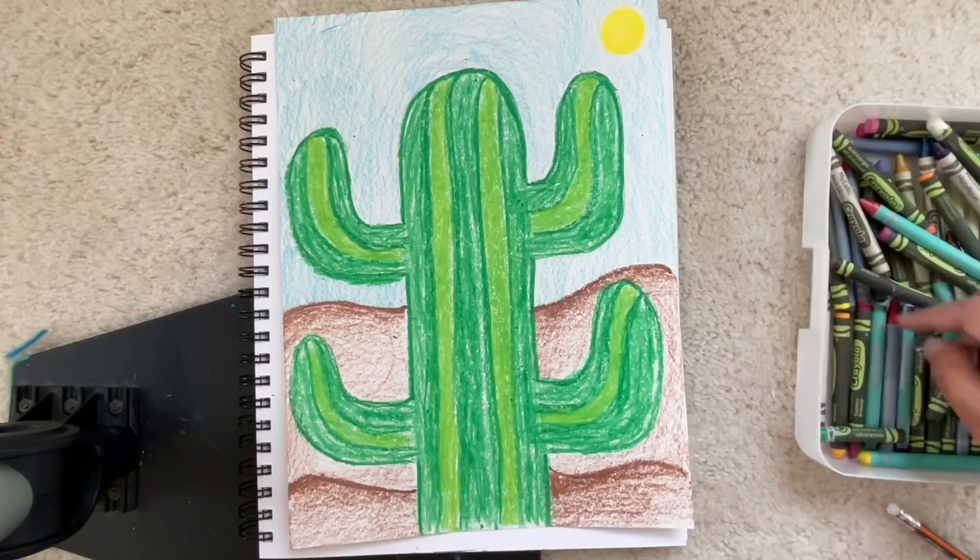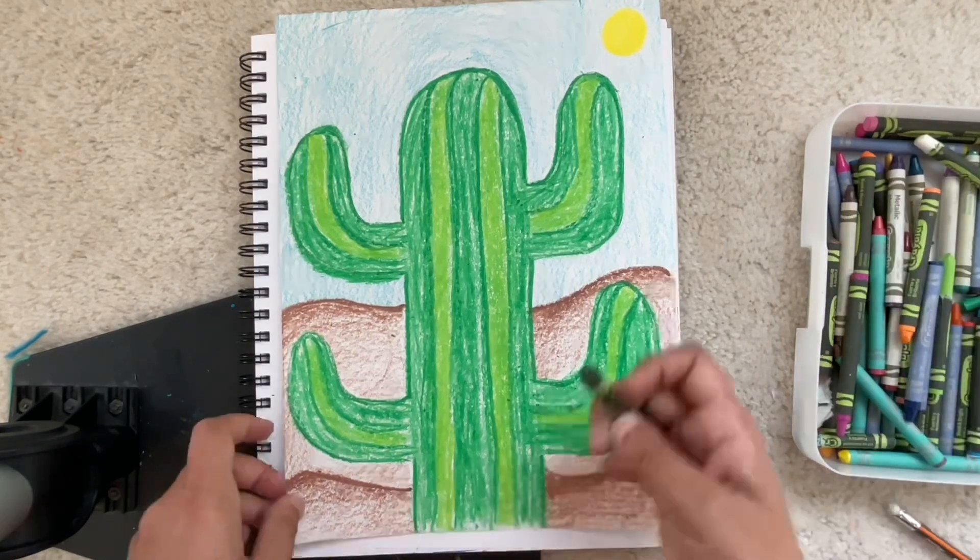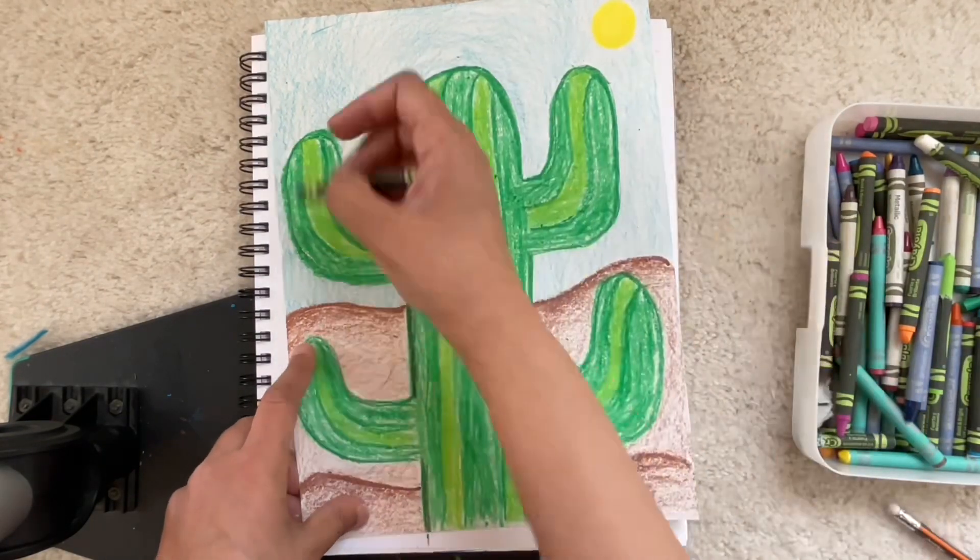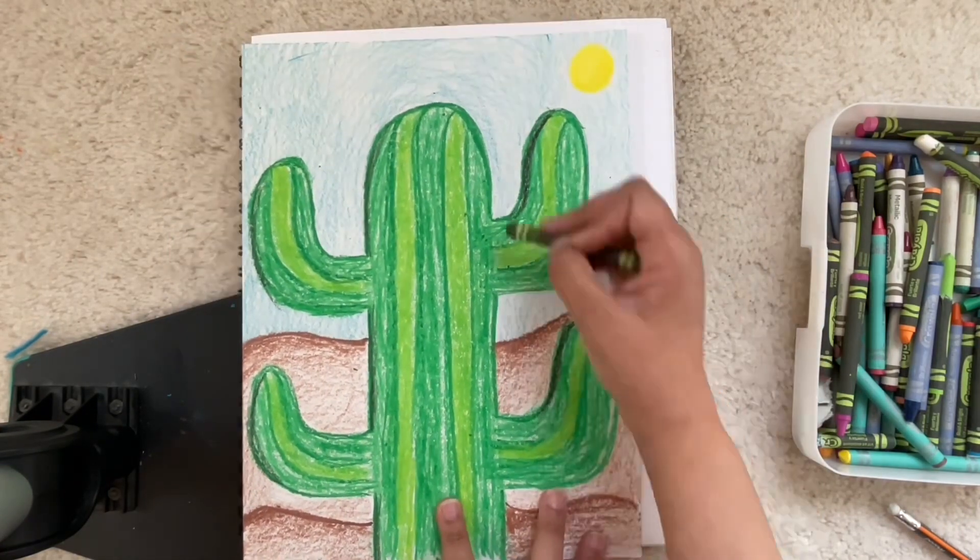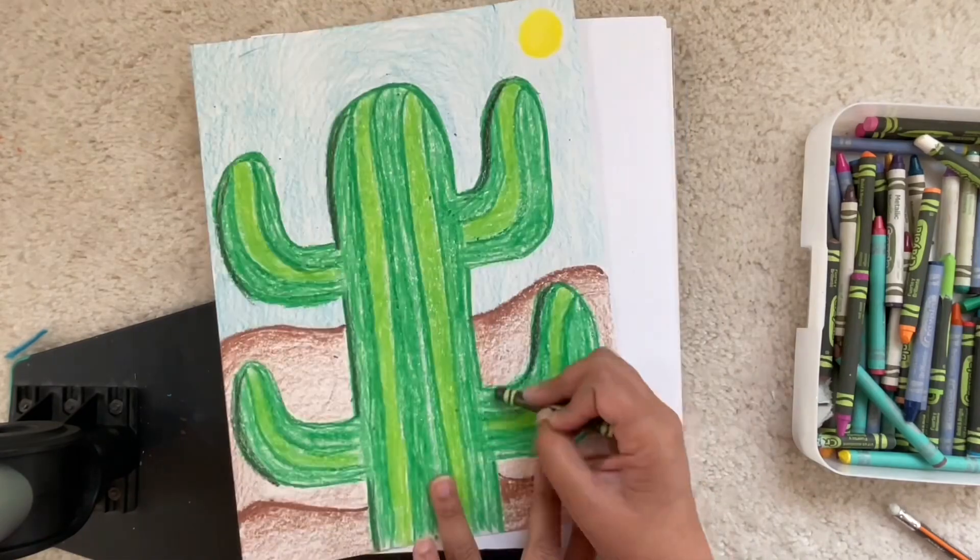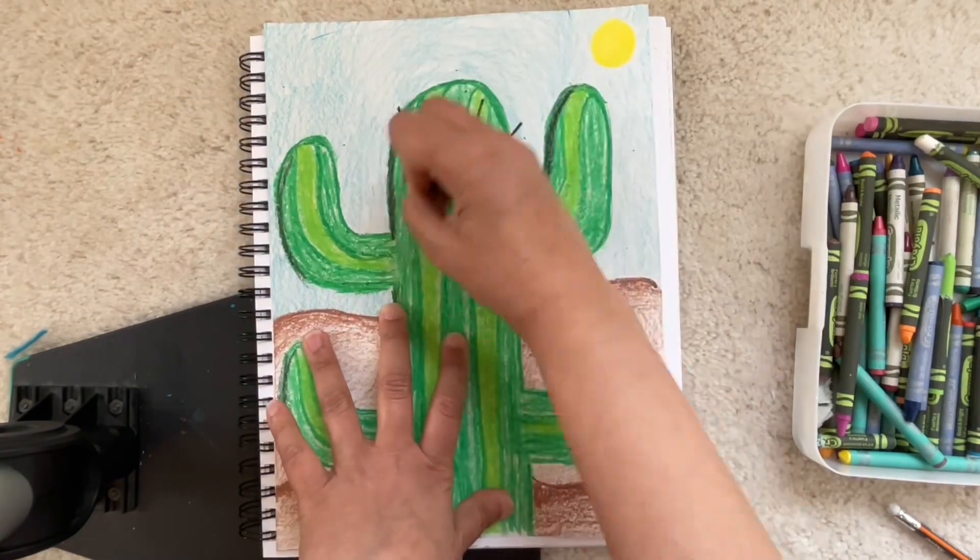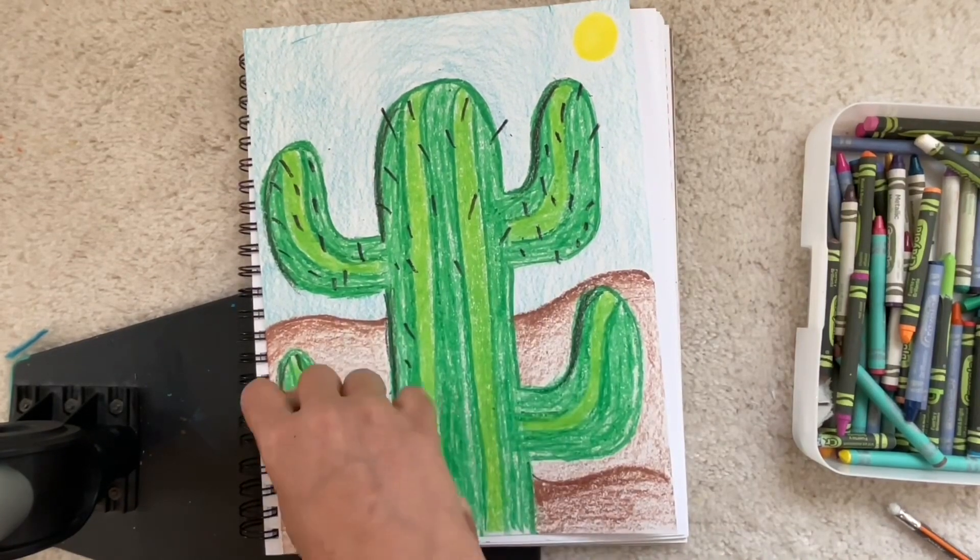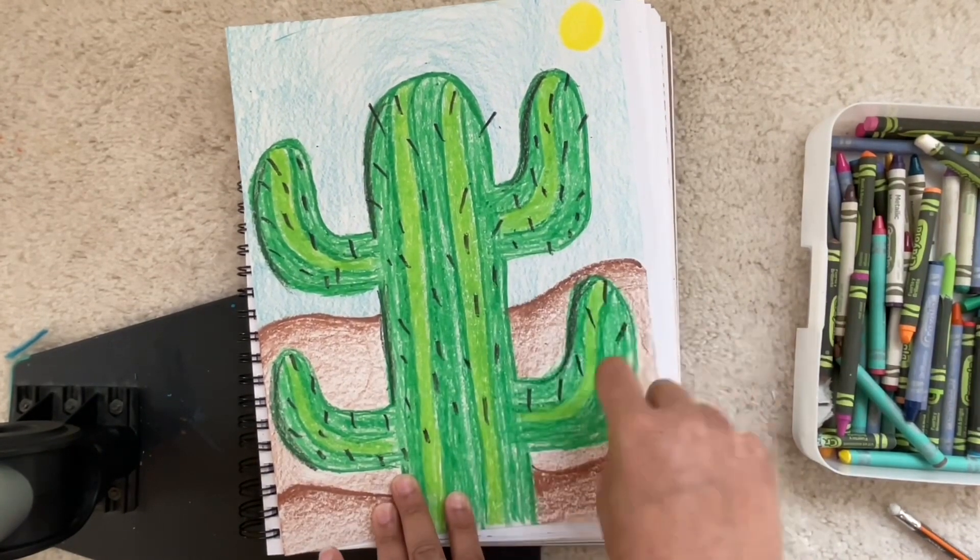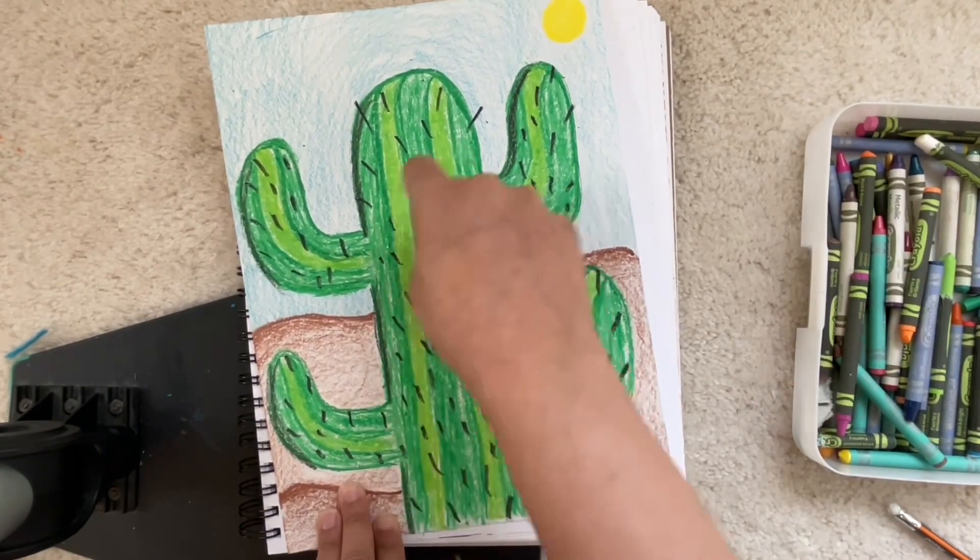Now the most fun part, you will find a black crayon and you will on the left side of your cactus draw some shadow that's away from the sun. Then you go in and draw your cactus spikes. And there you have it.